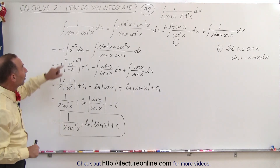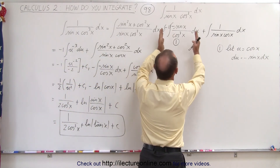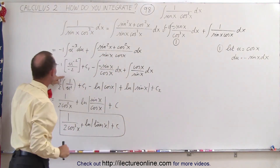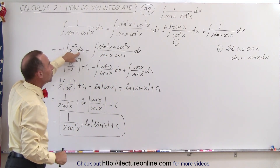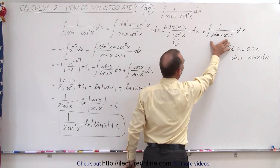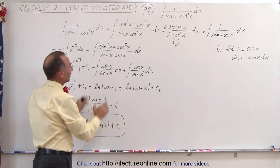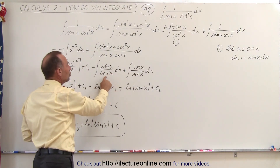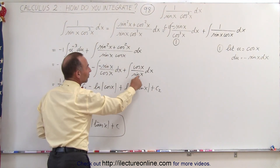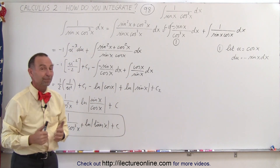In summary, you replace the 1 by the sum of sine squared plus cosine squared, ending up with two separate integrals. The first is integrated by letting u equal cosine of x, making it the integral of u to the minus 3 du since we have cosine cubed in the denominator. For the second integral, we again replace 1 by sine squared plus cosine squared, write two separate integrals, let u be the denominator, and integrate each as du over u to get the natural log terms.